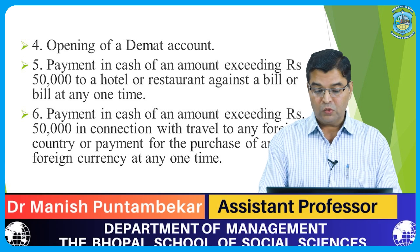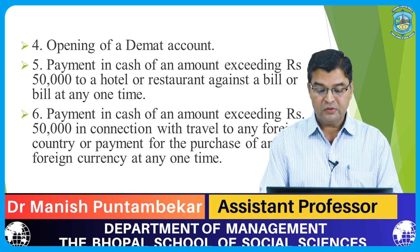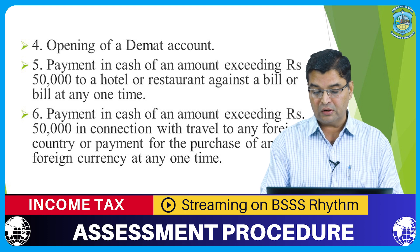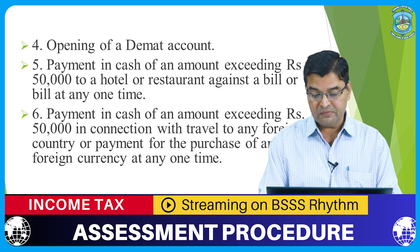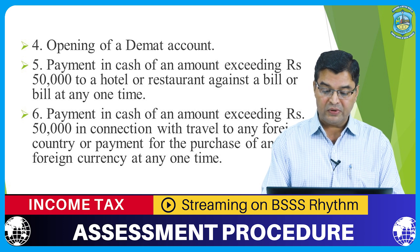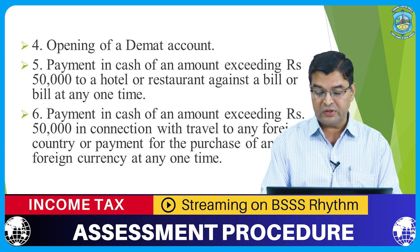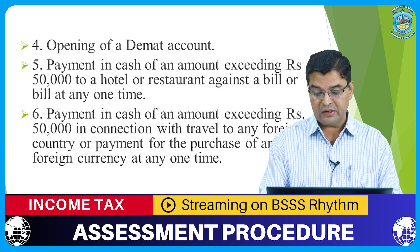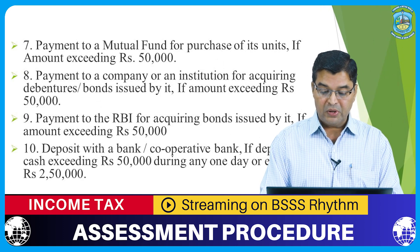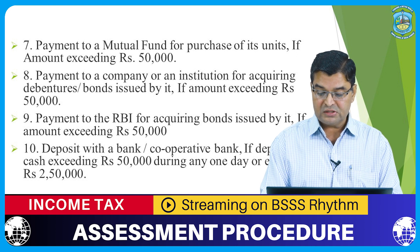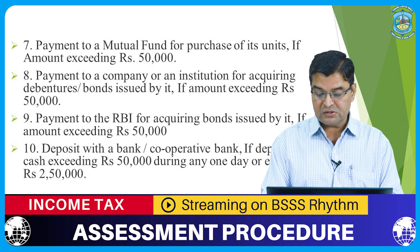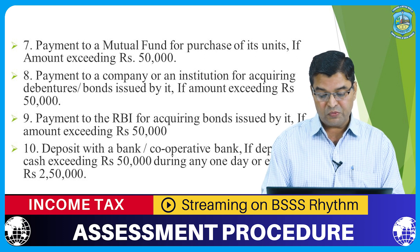Fourth: opening of a DMAT account. Fifth: payment in cash of an amount exceeding rupees 50,000 to a hotel or restaurant against a bill or bills at any one time. Sixth: payment in cash of an amount exceeding rupees 50,000 in connection with travel to any foreign country or payment for purchase of any foreign currency at any one time. Seventh: payment to a mutual fund for purchase of its units if amount exceeds rupees 50,000. Eighth: payment to a company or an institution for acquiring debentures or bonds issued by it if amount exceeds rupees 50,000.